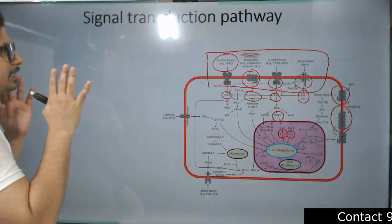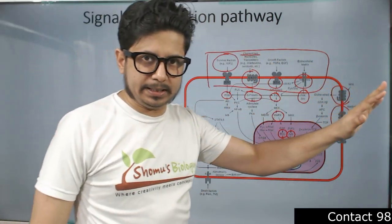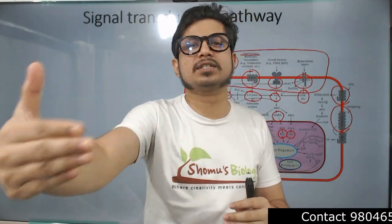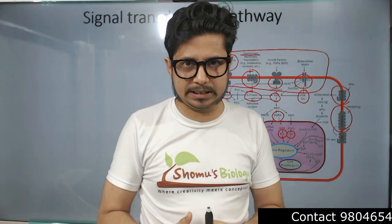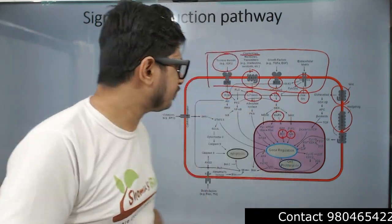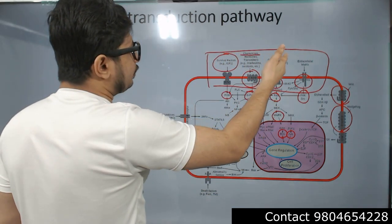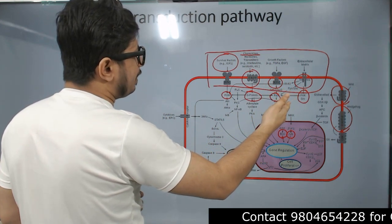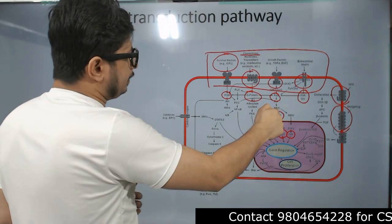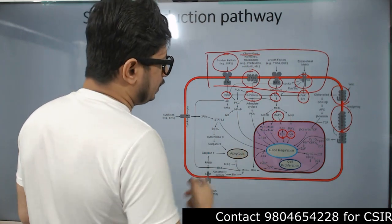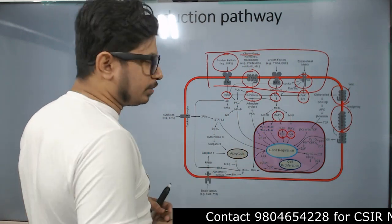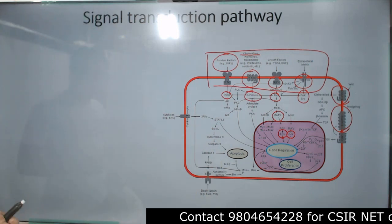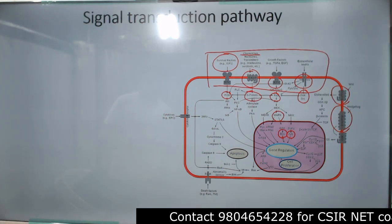Ultimately they relay the signal downstream — for MAP kinase pathway: RAS, RAF, MAKE, ARC — and ARC is also known as MAP kinase, hence the pathway name. These pathways trigger activity all the way to the nucleus. For example, MAP kinase pathway activates transcription factors FOS and JUN, causing specific genes to be expressed and their protein products released into the cytosol.